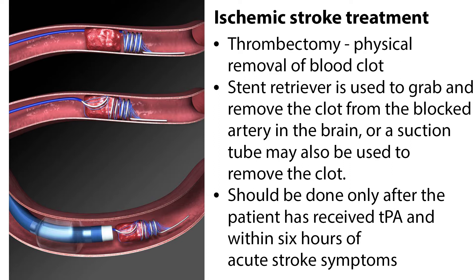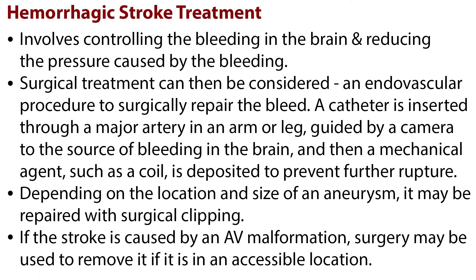The thrombectomy procedure should be done only after the patient has received TPA and within six hours of acute stroke symptoms. Treatment for a hemorrhagic stroke involves controlling the bleeding in the brain and reducing the pressure caused by the bleeding. Surgical treatment can then be considered, which usually involves an endovascular procedure to surgically repair the bleed. A catheter is inserted through a major artery in an arm or leg, guided by a camera to the source of bleeding in the brain, and then a mechanical agent such as a coil is deposited to prevent further rupture. Depending on the location and size of an aneurysm, it may be repaired with surgical clipping. If the stroke is caused by an AV malformation, surgery may be used to remove it if it is in an accessible location.